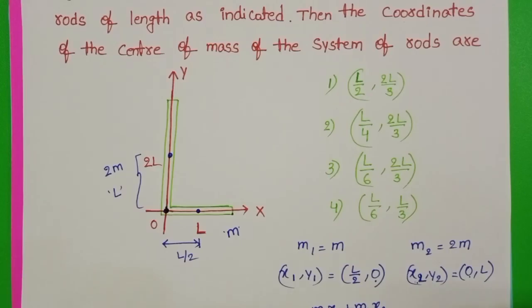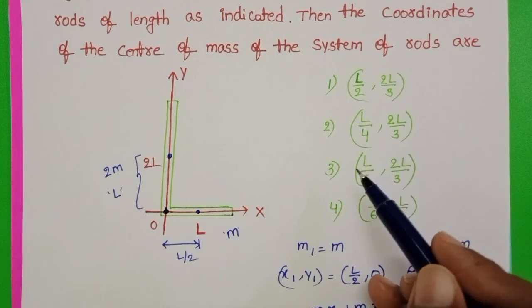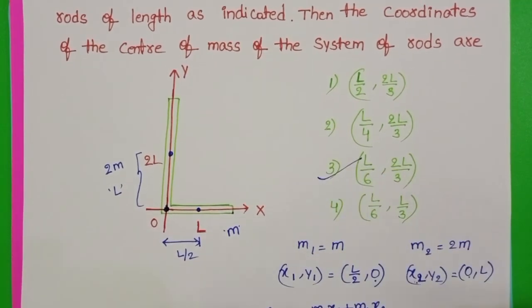The coordinates of center of mass of the system of rods: L by 6 comma 2L by 3. Third option is correct.